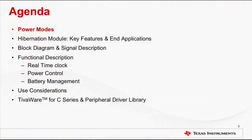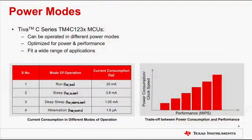Let's get started and take a look at the power modes first. The TM4C123X family of microcontrollers are optimized to consume low power and deliver high performance to fit a wide range of applications. Clearly, a trade-off exists between power consumption and performance. As you can see in the diagram towards the right, for applications that demand higher performance, the power consumption is higher as well.